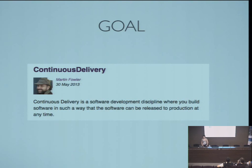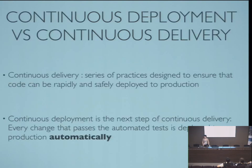We are going to talk about Continuous Delivery. What's Continuous Delivery? This is the definition of Martin Fowler. Continuous Delivery is the capacity of going to production, to release to production at any moment. Continuous Deployment is the next step — to do this automatically. We don't click any button; we just commit and the modification goes to production directly.